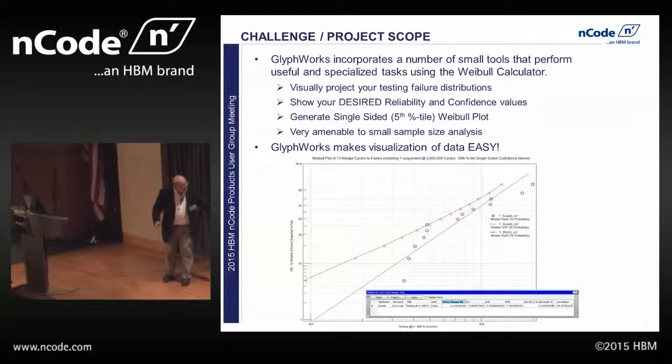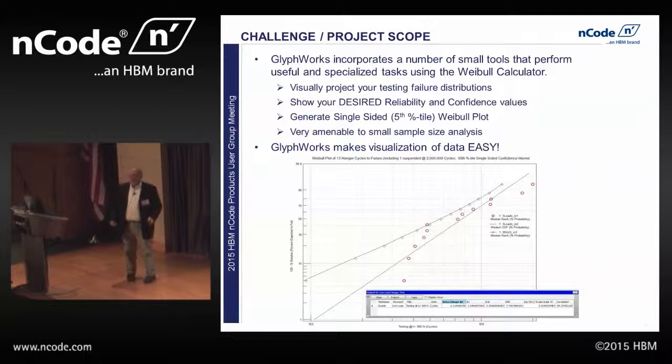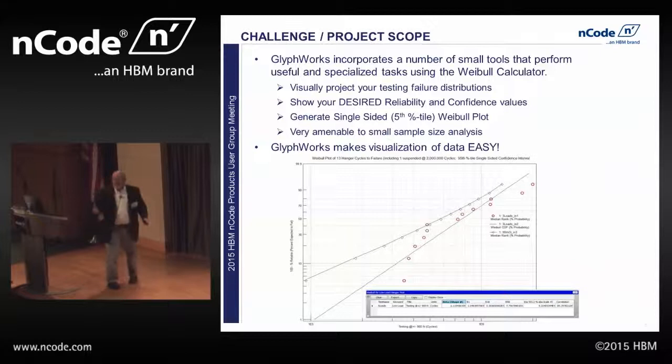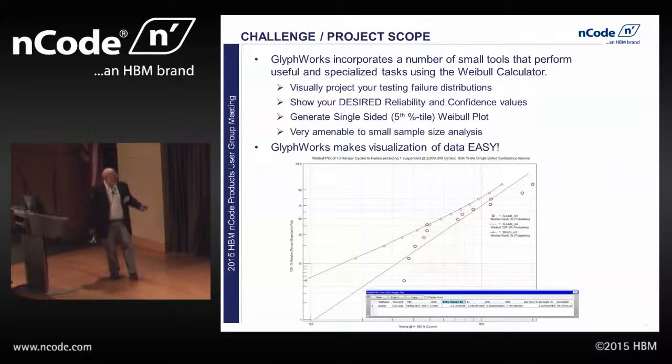Weibel in and of itself is very usable and amenable to small sample sizes, and that's what we get in testing. Hopefully not the one-part guy — we test 12 or 15 parts. You'd probably remember from statistics that you need to see 30 parts. Weibel allows you to deal with smaller sample sizes by about an order of magnitude.